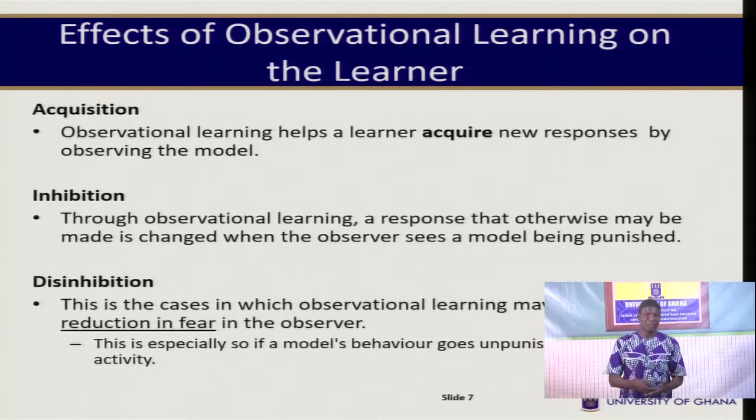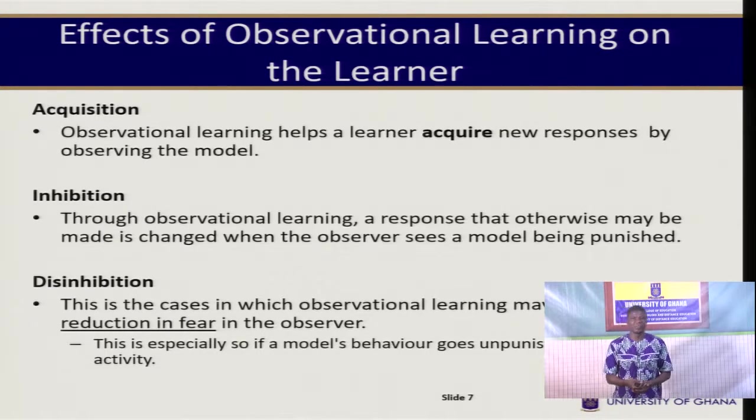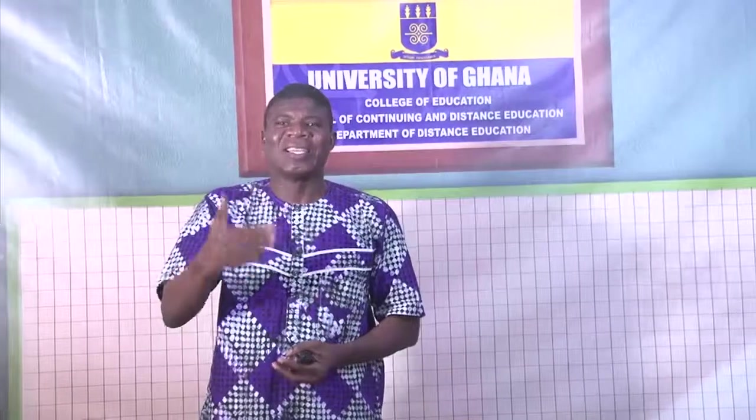There can also be inhibition. This refers to a response that otherwise may be made, which is changed when the observer sees that the model is being punished. So there can be inhibition in the learner's desire to observe and imitate the behavior of the model. If in the course of observation it becomes clear that that behavior has been punished, then the observer will want to have a change of mind. The punishment meted out to the model will inhibit the observer from exhibiting that behavior.